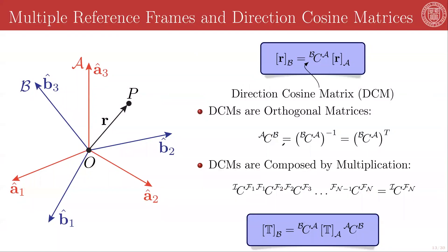We've gone to all this trouble of defining all of these rules about reference frames, and it seems a shame to waste all this machinery if we're only ever going to be using a single reference frame. Remember, reference frames are the bases of vector spaces, specifically of the Euclidean vector space, and basis sets are not unique, which means that reference frames are not unique. I should be able to describe the R3 space in an infinite number of ways, meaning I can define an infinite number of reference frames.